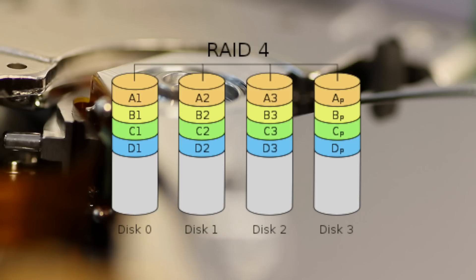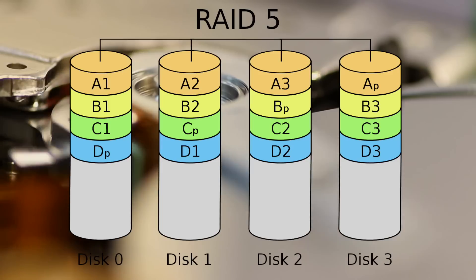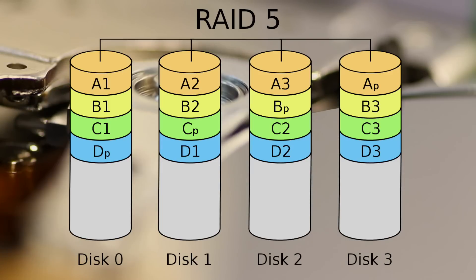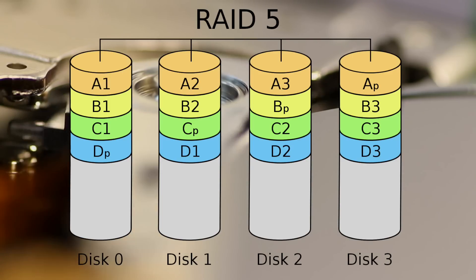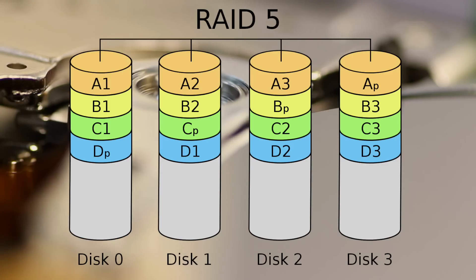So here, you get the performance benefits of RAID 0 with some redundancy, but not enough. RAID 5 is similar to RAID 4, except the parity bits are spread across all drives equally. So you can have 1 of any installed disks fail and your data will still be safe — better than RAID 4, but still not enough.